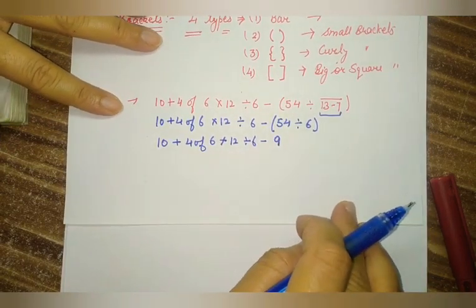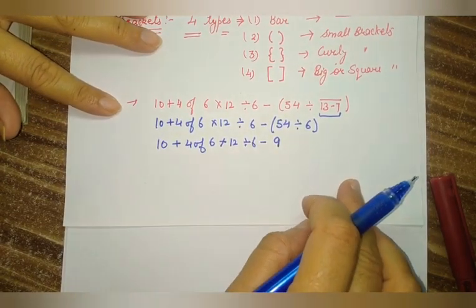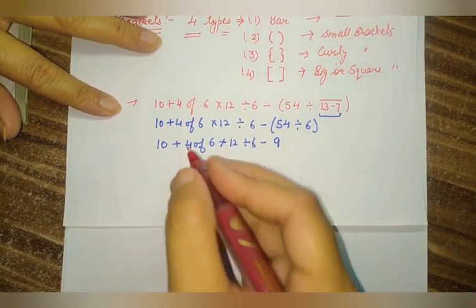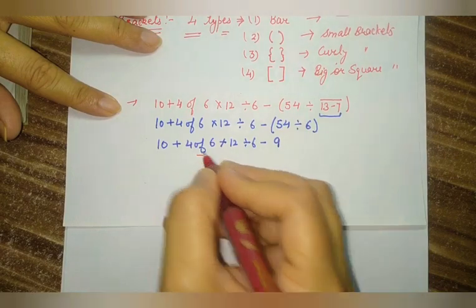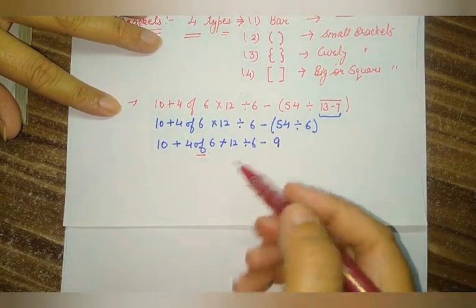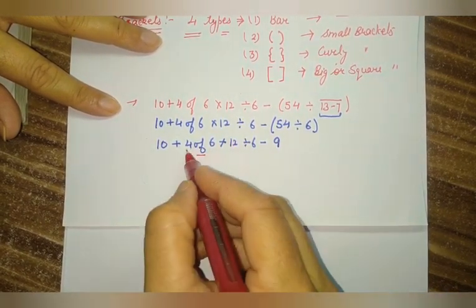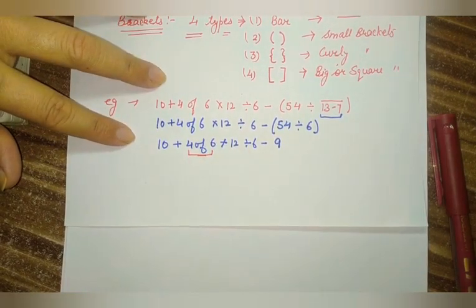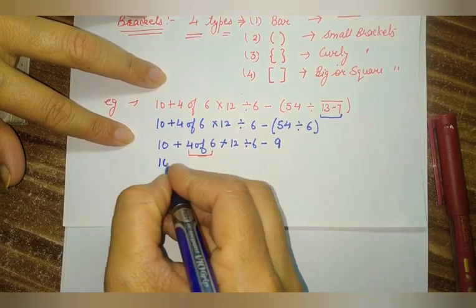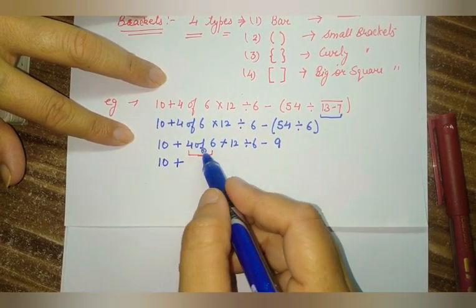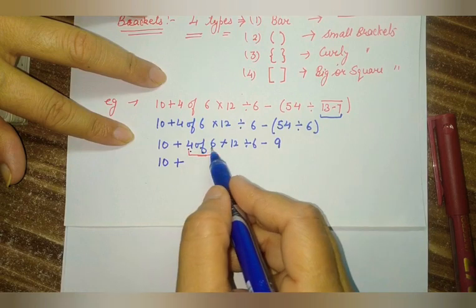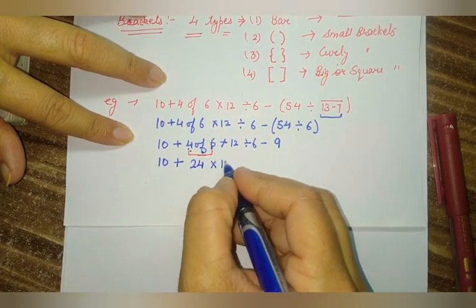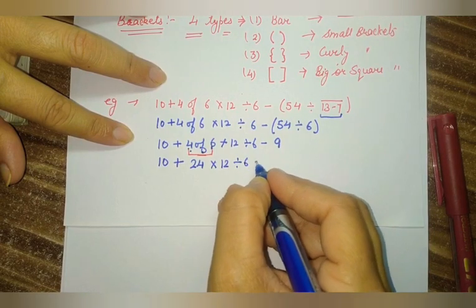Now friends, we have removed all the brackets, and we have to solve using DMAS. Have you observed there is a letter 'Of'? What is the meaning of this 'Of'? 'Of' means these two terms multiply. So here, directly we remove the word 'Of' and multiply 4 and 6: 4 times 6 equals 24. So we have: 10 plus 24 multiply by 12 divide by 6 minus 9. Then after, the next is Divide. So first we solve only those two digits between which the division sign is given — between 12 and 6. 12 divide by 6 gives the answer 2.